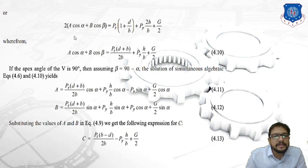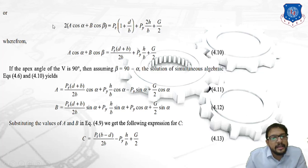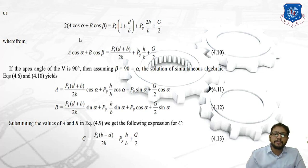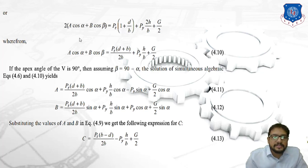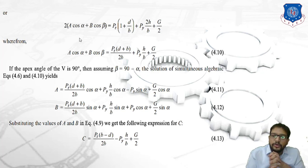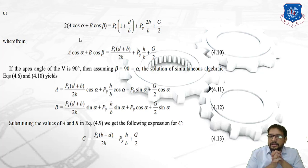Simplifying further, we get: A·cos(α) + B·cos(β) = Pz·(d + b)/(2b) + Py·(h/b) + G/2. This is equation 4.10. Now, if the apex angle of the V is 90°, then β = 90° − α. Solving the simultaneous algebraic equations 4.6 and 4.10 gives the values of forces A and B.